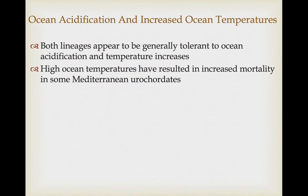Both of these lineages appear to be generally tolerant to ocean acidification and temperature increases. There have been a few situations where high ocean temperatures have been shown to increase mortality in some Mediterranean tunicates, but in general they seem to be fairly tolerant of increasing water temperatures.